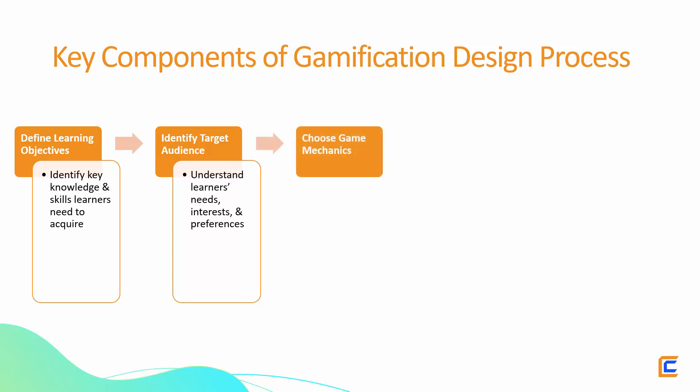Step 3: Choose Game Mechanics. The third step in the gamification design process is to choose the game mechanics that will support the learning objectives and engage the learners. Game mechanics are the rules and systems that make up a game. Examples of game mechanics include points, badges, levels, and challenges. By choosing the right game mechanics, you can create an engaging and effective learning experience.